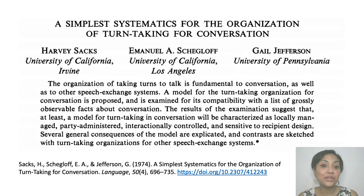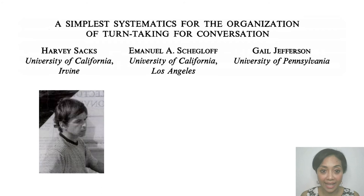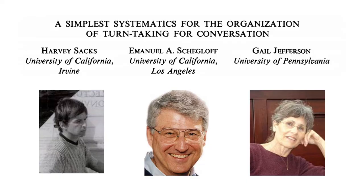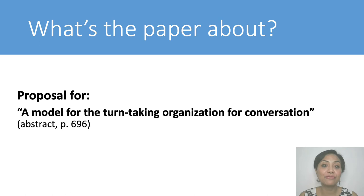Continuing to our main topic: the history of CA has an important milestone which is the publication of a paper entitled 'A Simplest Systematics for the Organization of Turn-Taking for Conversation.' The paper is also called SSJ 1974, a shortened form of Sacks, Schegloff, and Jefferson. The paper is mainly a proposal for what SSJ call a model for the turn-taking organization for conversation. This model came from observation of a bunch of audio recordings. They worked with the data for six years — or in their term, half a dozen years — and the pattern became clear and consistent to them.